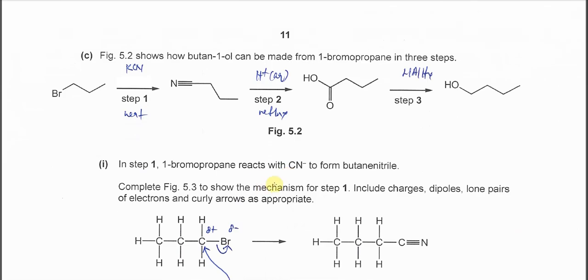Part C. Figure 5.2 shows how butan-1-ol can be made from 1-bromopropane. So first carbon with the bromine, 1-bromopropane. Step 1 is to form this nitrile, butanenitrile. We know that when a haloalkane, the bromine is substituted by CN, it's going to use potassium cyanide in ethanol with heat.